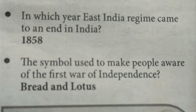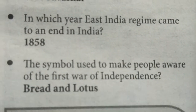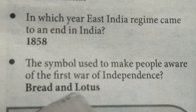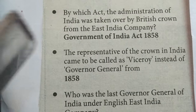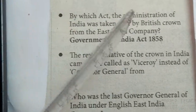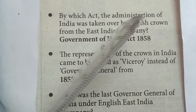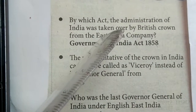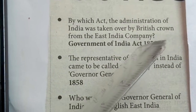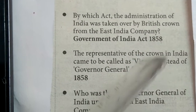The symbol used to make people aware of the First War of Independence was Bread and Lotus. By which act was the administration of India taken over by the British Crown from the East India Company? The Government of India Act, 1858.